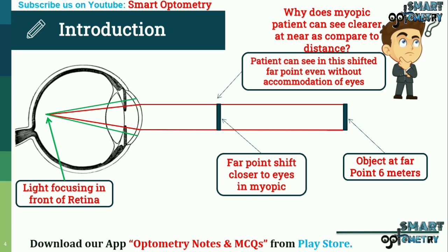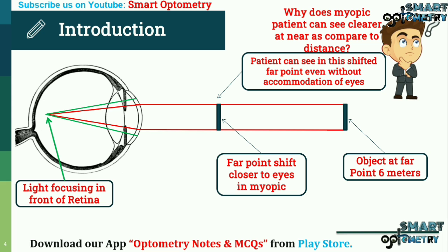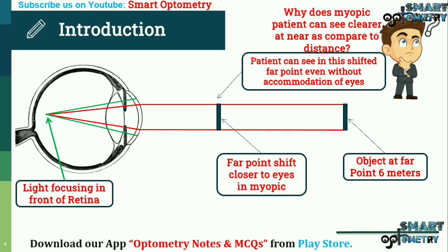Because of the farpoint shifting closer to the eyes, a myopic patient can see near objects or objects at short distance clearly even without accommodation. That is why myopia is called nearsightedness or short-sightedness.